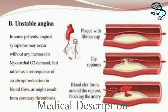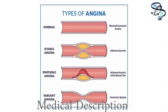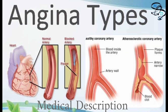The third type is variant angina, also known as Prinzmetal variant angina or angina inversa. It is usually rare and typically occurs in younger patients who have other pre-existing heart conditions. It generally occurs while resting, especially during the night or early morning.